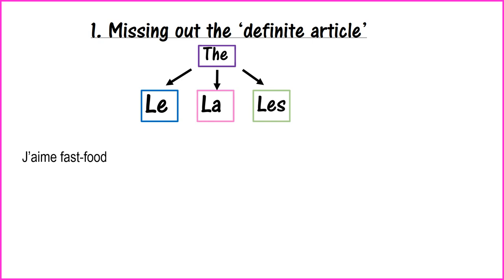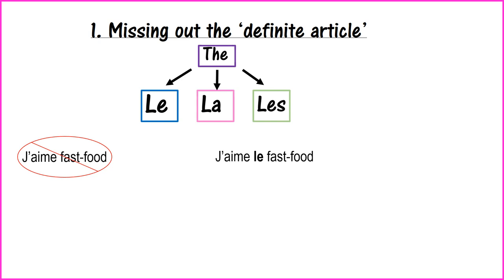Here's an example phrase from the exams: 'J'aime fast food.' It's easy to see what this student means — 'I like fast food' — it's a literal translation from English. However, that is incorrect because in French we use the definite article much more than in English. We would actually say 'j'aime le fast food.' When you hear French people speaking English, they often put in the definite article when they don't need it — you might hear them say 'I like the fast food.' Don't fall into the same trap when writing in French.